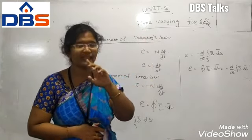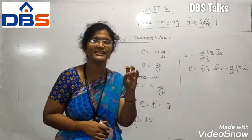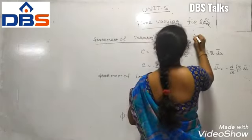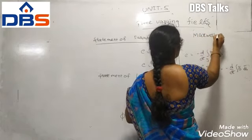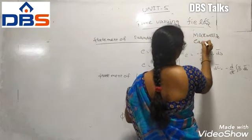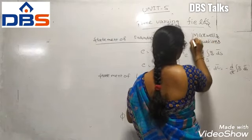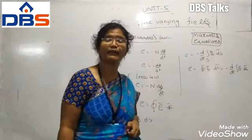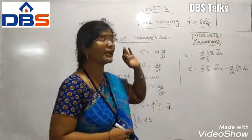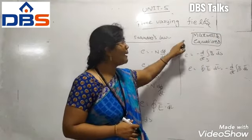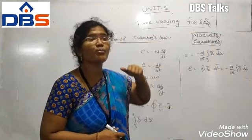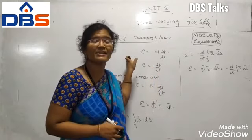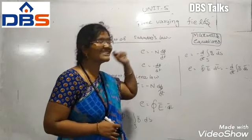The electric fields and magnetic force in time varying fields is discussed by using the Maxwell's equations. The time varying electric field and magnetic field will be discussed by using the Maxwell's equations. Before going to the Maxwell's equations, first you need to know what is the statement of Faraday's law and what is the statement of Lenz's law.